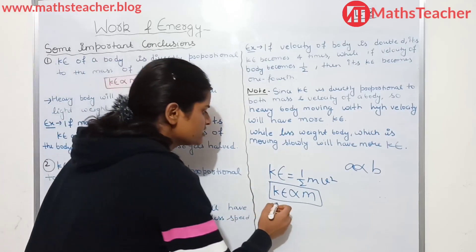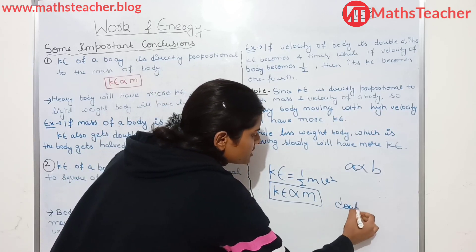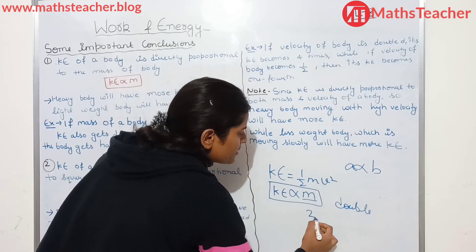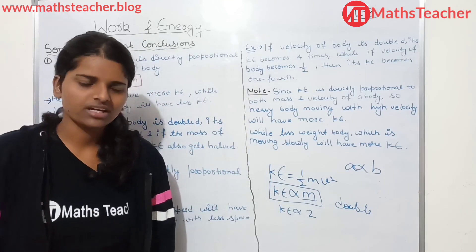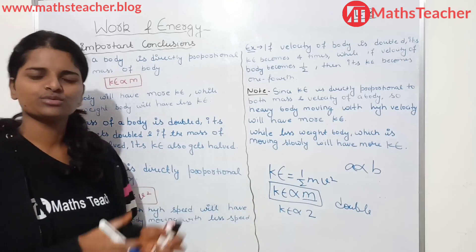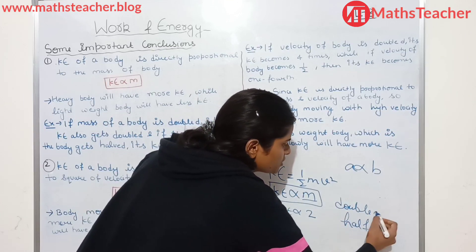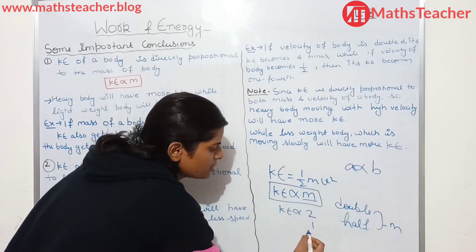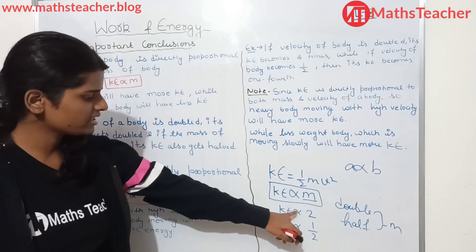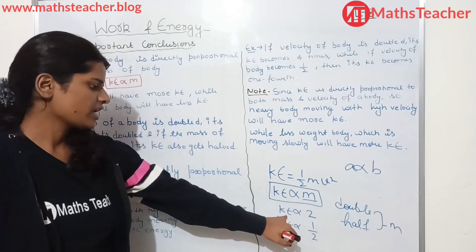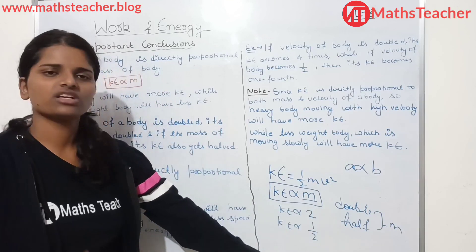If the mass of a body is doubled, kinetic energy will also be doubled. If mass is halved, kinetic energy will also be halved. A heavy body will have more kinetic energy — if one body is 5 kg and another is 20 kg, the heavier one has more kinetic energy. If mass is 100 kg, kinetic energy will be more; if mass is 20 kg, kinetic energy will be less.